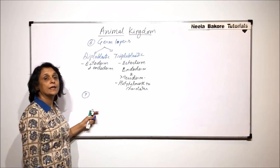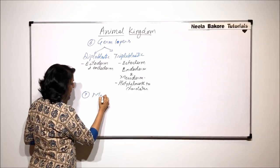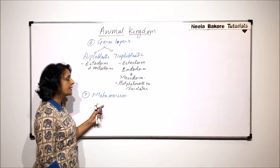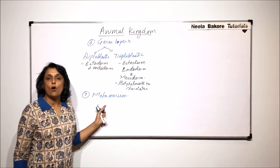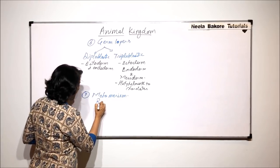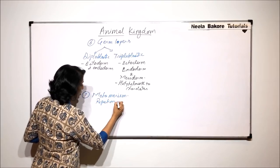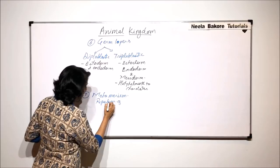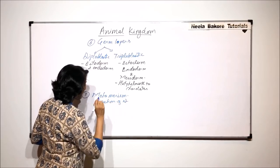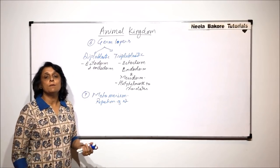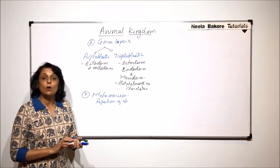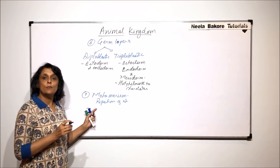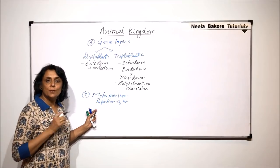The next parameter is metamerism. Metamerism basically means repetition of some structures — repetition of structures. This repetition can be external as well as internal.